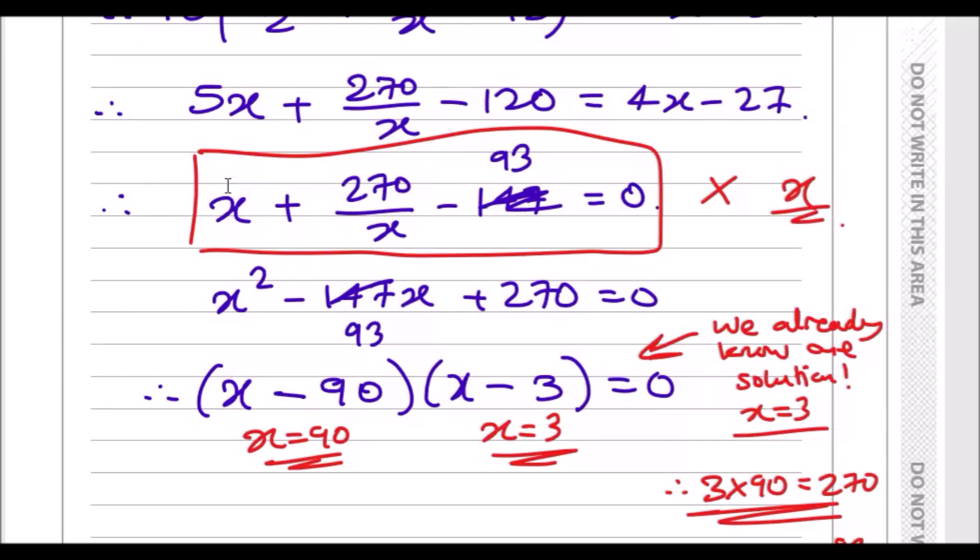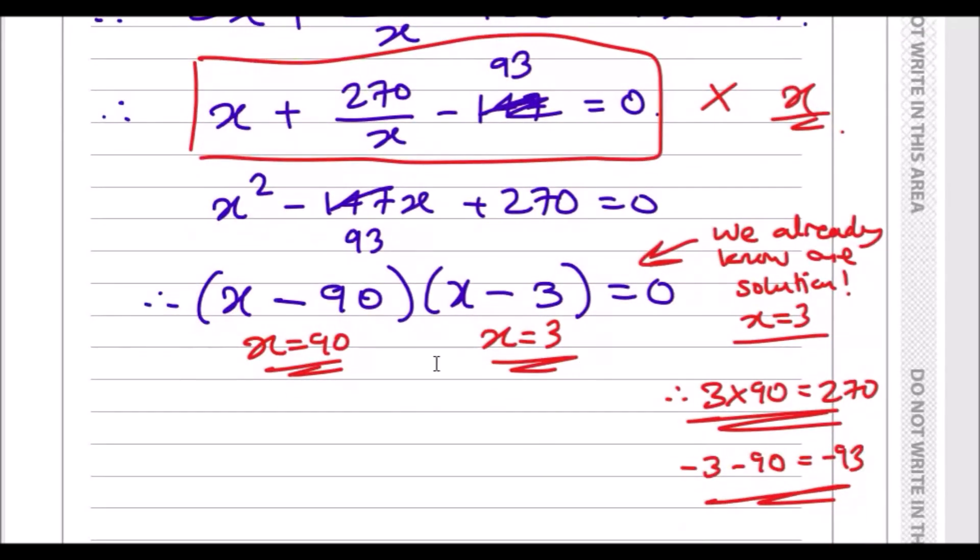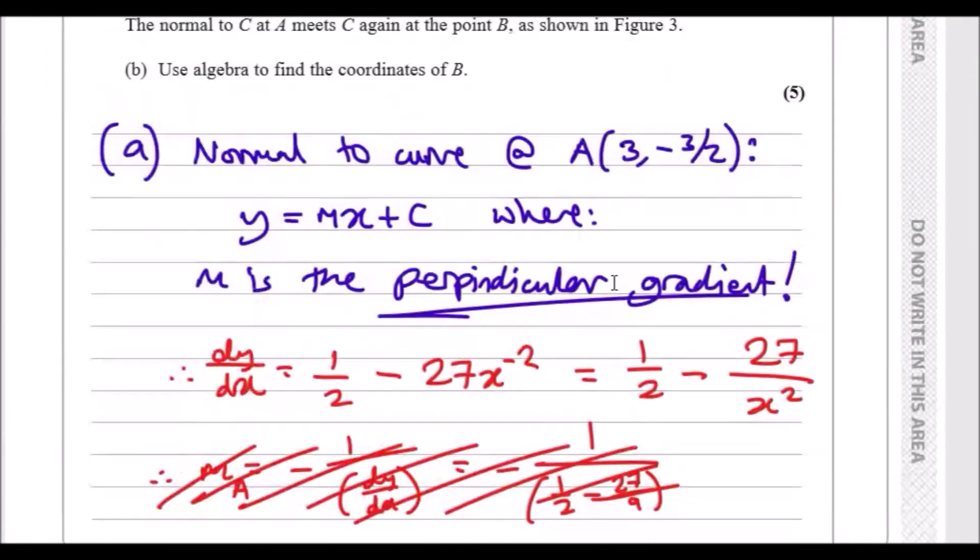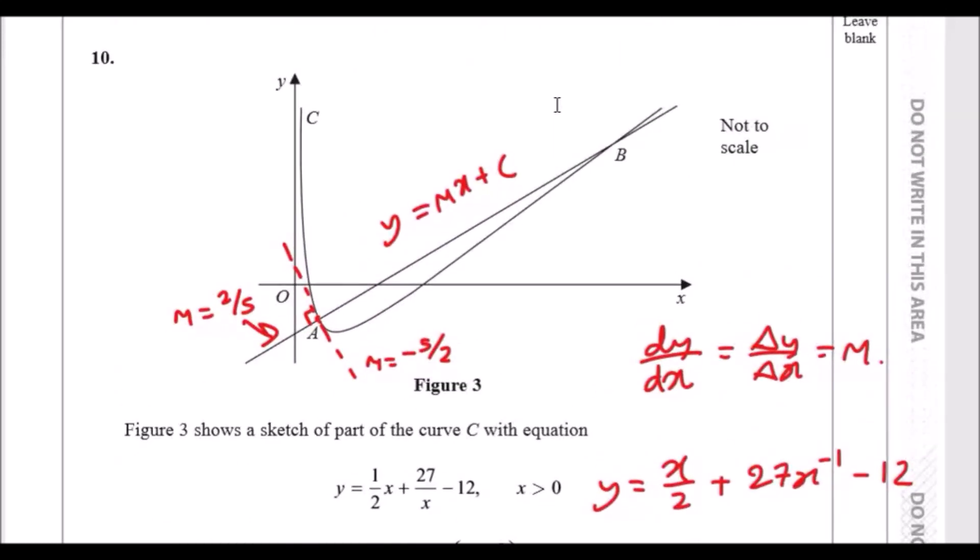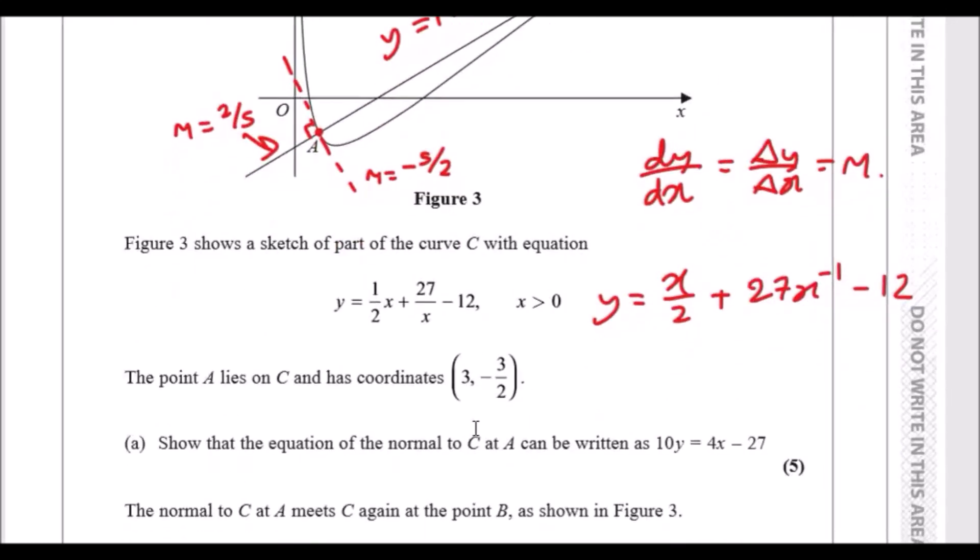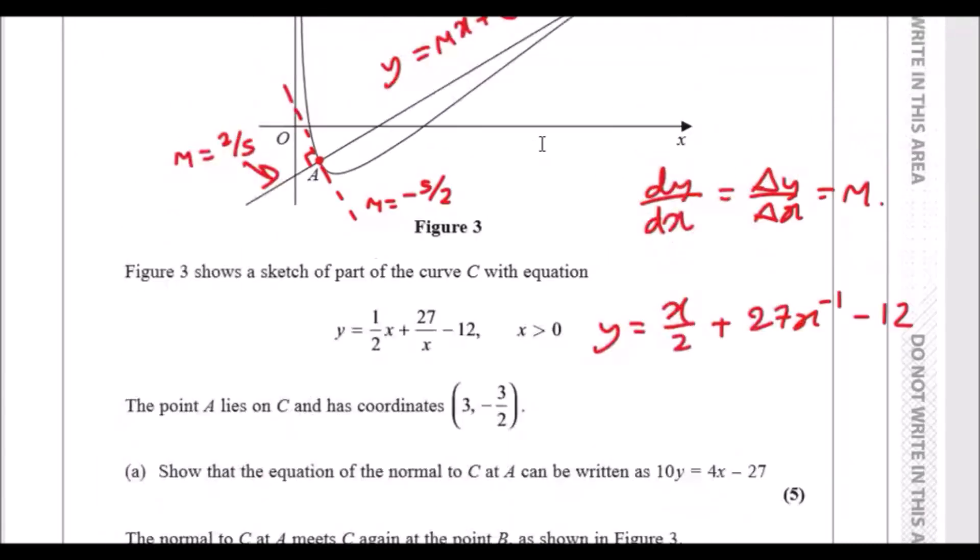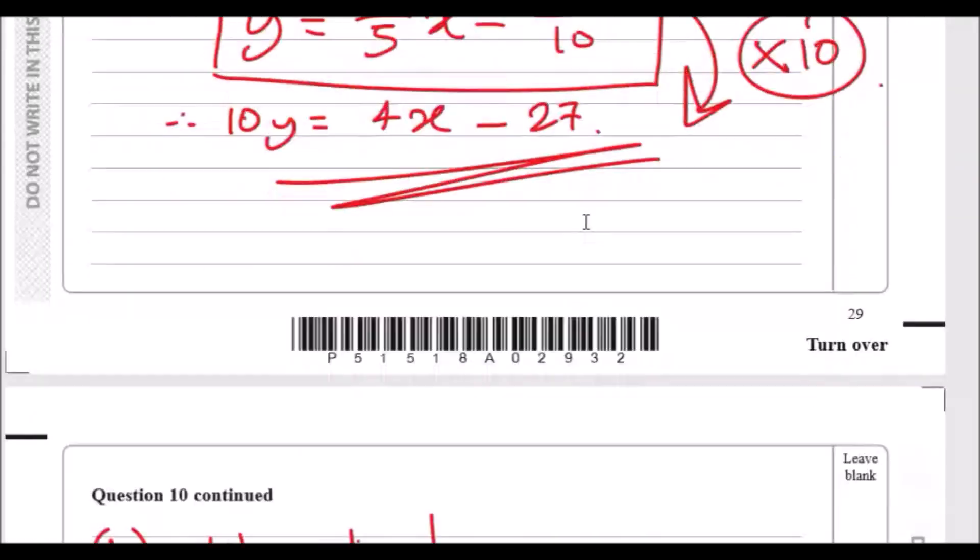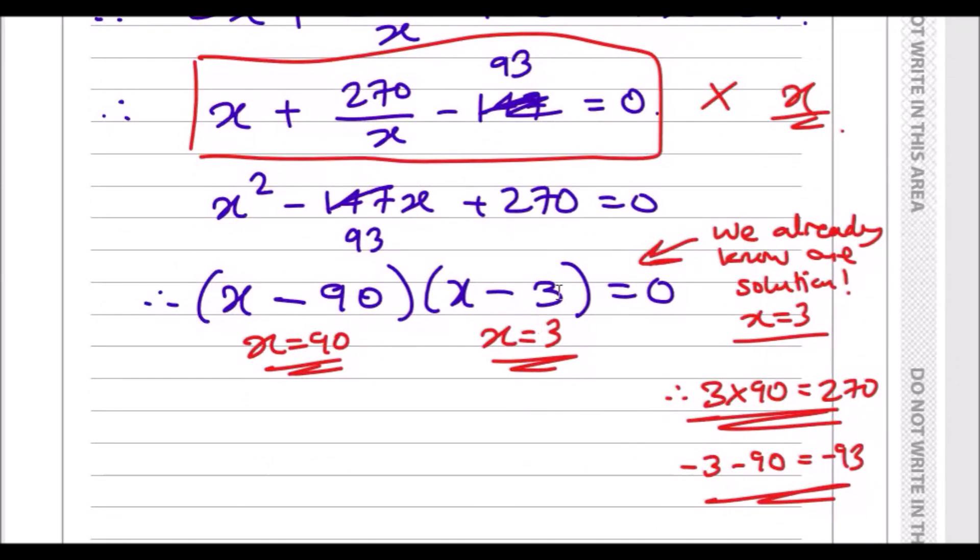What I did, I just multiplied everything by x, because when you times everything by x, you can get an x squared here, a constant here, and then another x term. So you get x squared here minus 93x and plus 270. And I say quadratic. Now to factorize this quadratic, this one looks like, I just knew it. We already know one of the solutions because we already know that it cuts the curve at A and B, and we have the coordinates of A. One of them it cuts at 3, x is 3, so we have a solution.